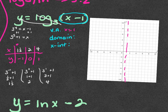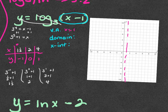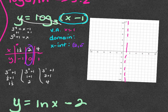For the domain, you always want to look at your graph because it depends on if you're on the right side or the left side of the vertical asymptote line. The x-intercept is already here — it's (2, 0). The quiz only has graphs for the first two questions.